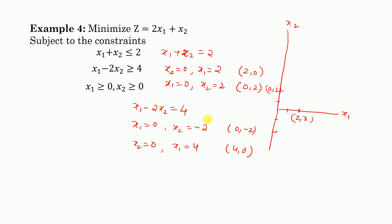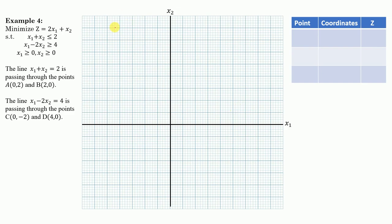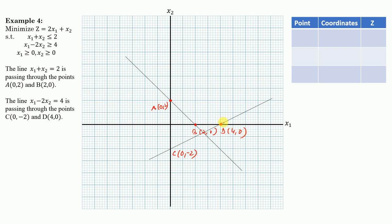To summarize: the line x1 + x2 = 2 passes through point B (2, 0) and point A (0, 2). The line x1 - 2x2 = 4 passes through point C (0, -2) and point D (4, 0). We now have both lines plotted on the graph.